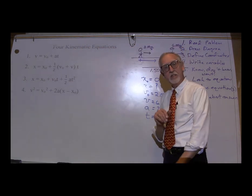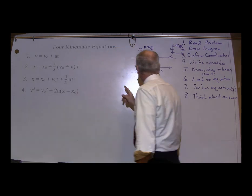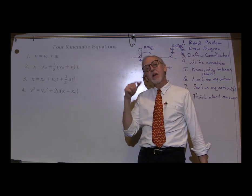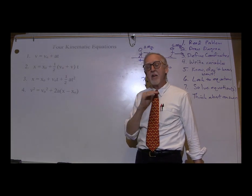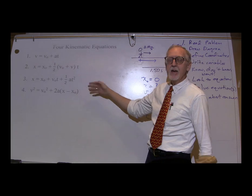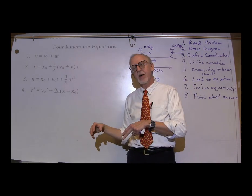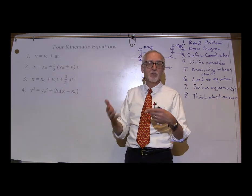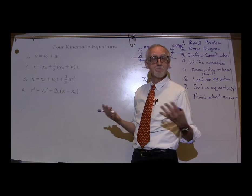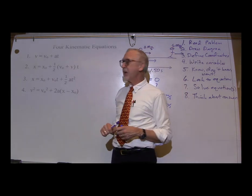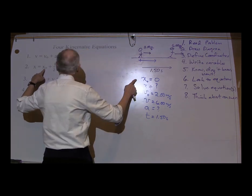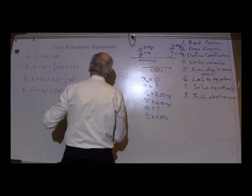Here are the equations. Let's solve this just like we did last time. What do we want? X and A. Where do we start? We might as well start with X. It's possible we cannot solve for A until we solve for X, or cannot solve for X until we solve for A. Let's see. Can we use the first equation to solve for X? No, there is no X in that equation. Can we use the second equation to solve for X? It's got an X in it. Do we know X naught? Yes. V naught? Yes. V? Yes. T? Yes. So we could use the second equation.